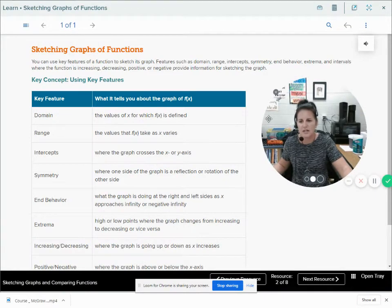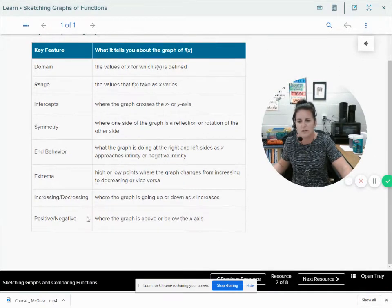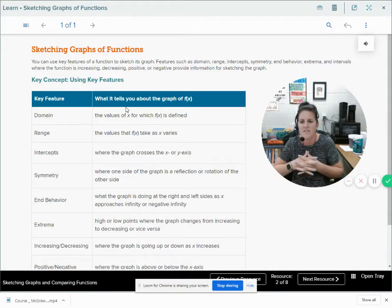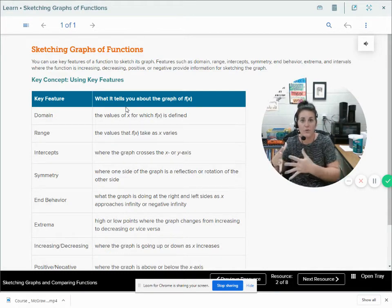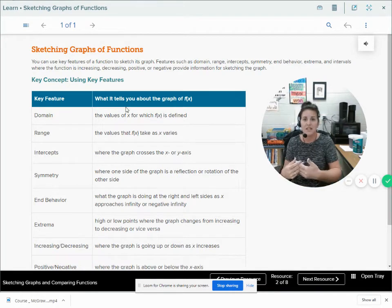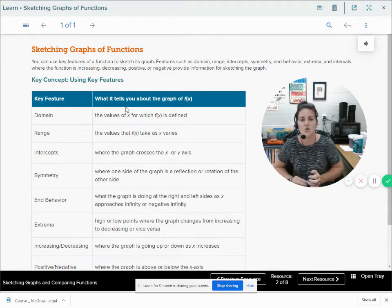Domain, range, intercept, symmetry, end behaviors, extrema, increasing, decreasing. These are the key concepts of this lesson that you should have. We've been building up to this point. In our previous lessons we've been talking about these things, and now we're going to try to tie it all together as we sketch graphs of functions.